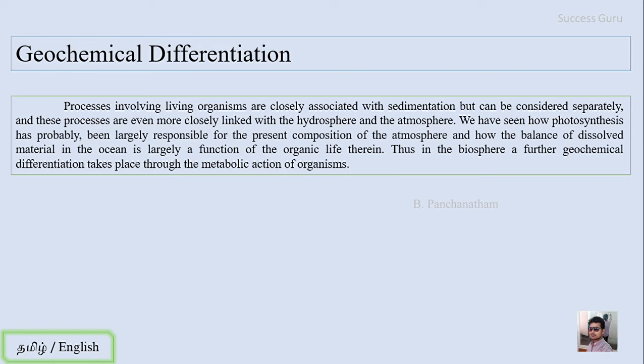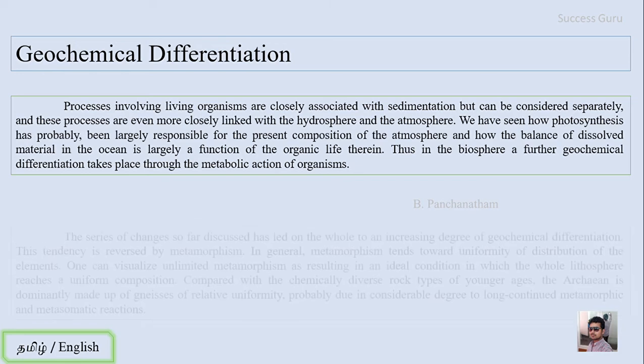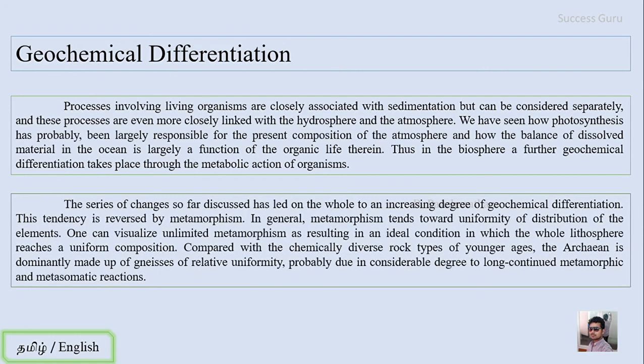We have seen different stages of differentiation where the elements have been separated one after the other. The series of changes so far discussed have led on the whole to an increasing degree of geochemical differentiation. That is what we have seen from the primary migration, the separation of heavier to the core and the lighter to the surface. Likewise, different processes are taking place by moving elements from one place to another. By this way, differentiation is taking place.